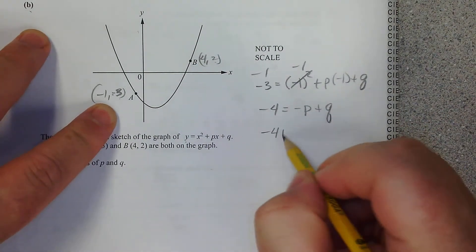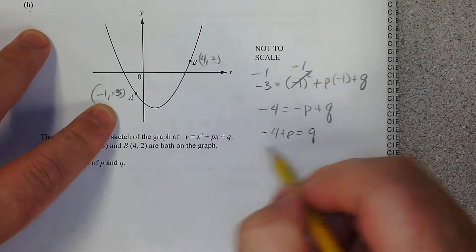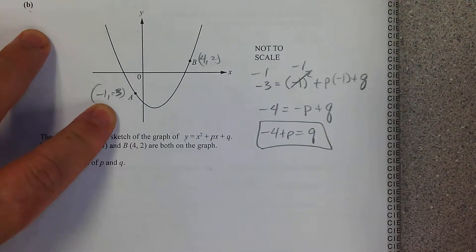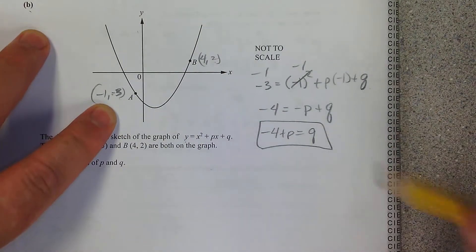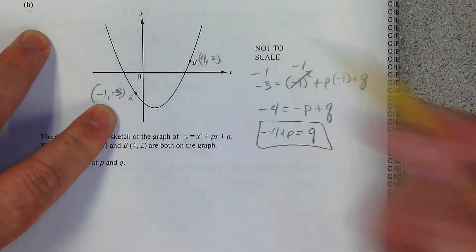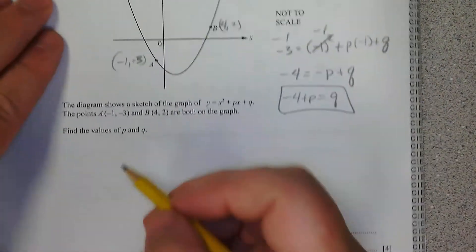We can simplify this a little bit. This is going to be a 1, and we're going to subtract 1 from both sides. So we're going to get negative 4 equals negative p plus q. Let's go ahead and just do this: negative 4 plus p equals q. Look at that.